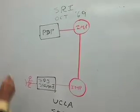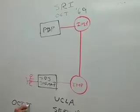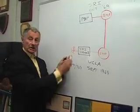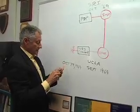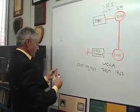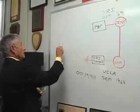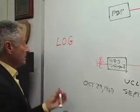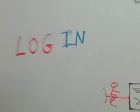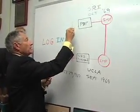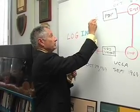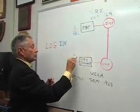On October 29th, 1969, one of my programmers Charlie Klein and I were in this room and we decided to log on to this machine. To log on, one has to type L-O-G and the remote machine will type in the IN. So our job was simply to type L-O-G. Up at the other end there was another programmer waiting, and we had a telephone connection between the two sites so they could talk to each other.